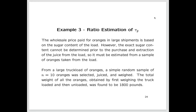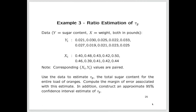From a large truckload of oranges, a simple random sample of 10 oranges was selected, juiced, and weighed. The total weight of all the oranges — obtained by weighing the truck loaded and then unloaded — was found to be 1800 pounds, giving us τ_x. The y values are the sugar content from chemical analysis and x is the weight of each orange, both in pounds. The corresponding x and y values are paired.